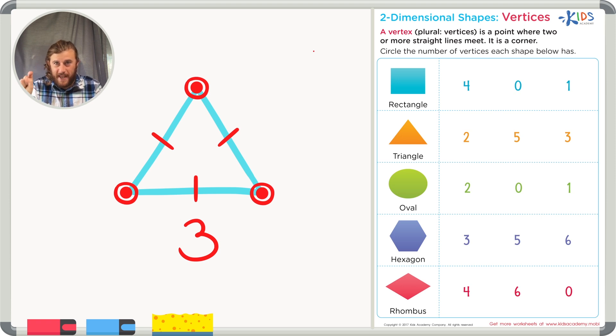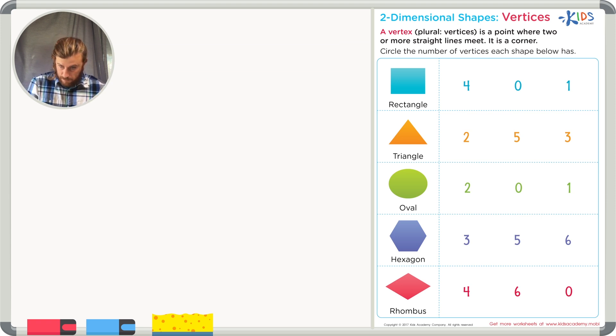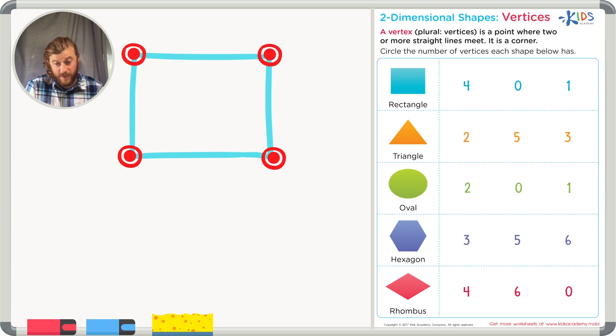Let's use this strategy of counting corners to figure out how many vertices each of the shapes have on our worksheet. The first example is a rectangle. Let's draw a rectangle and count the corners, or vertices. I see one, two, three, four corners, or vertices. Let's count the corners on our worksheet rectangle as well. One, two, three, and four. There are four vertices in a rectangle. Let's circle the number four.